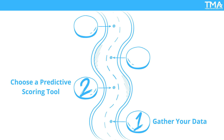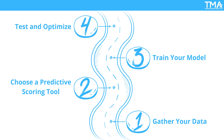Step three: train your model. Once your data is in place, train your model on historical sales data to identify patterns and correlations. Step four: test and optimize. Continuously test and optimize your model. As new leads come in and your sales strategy evolves, your lead scoring model should be updated to reflect the latest data and trends.